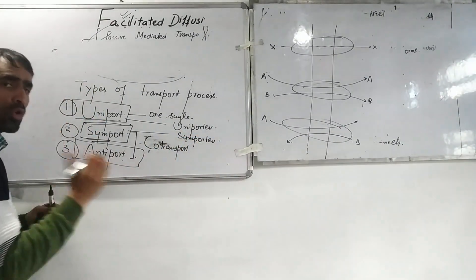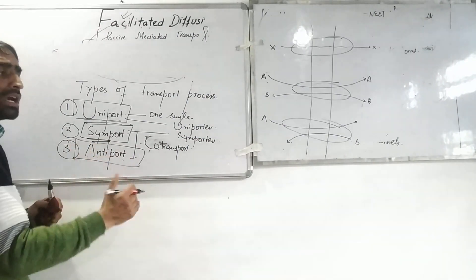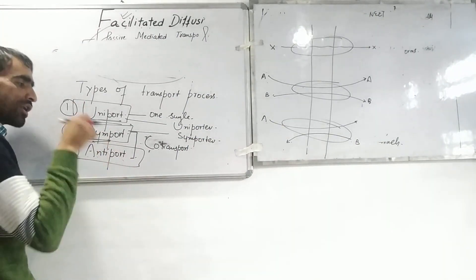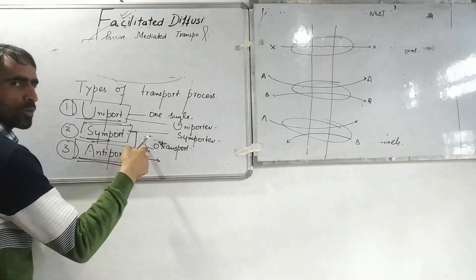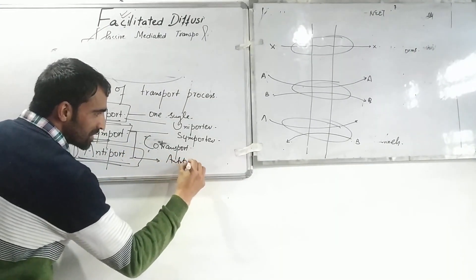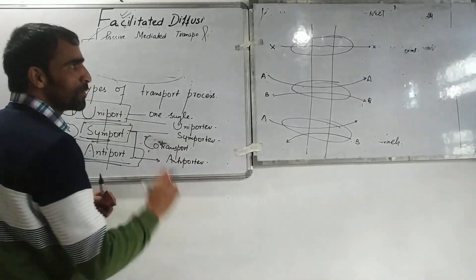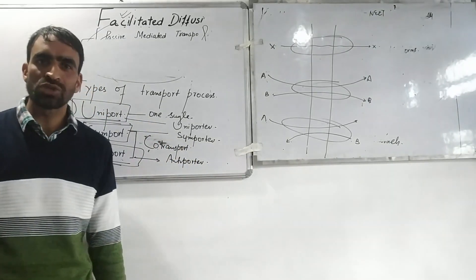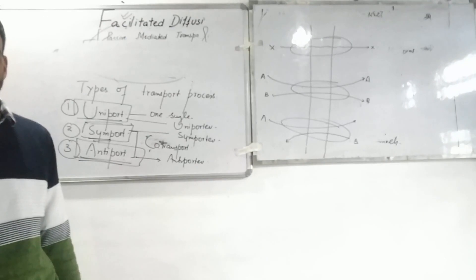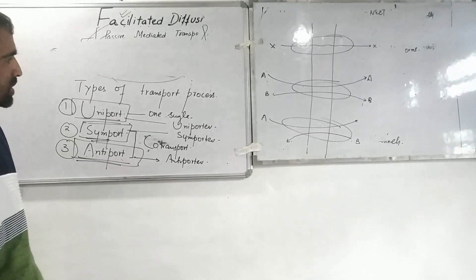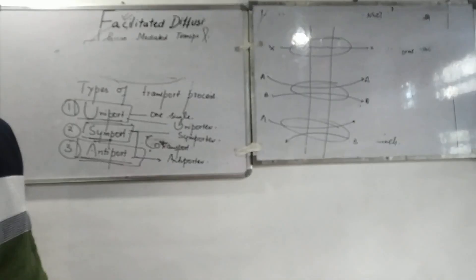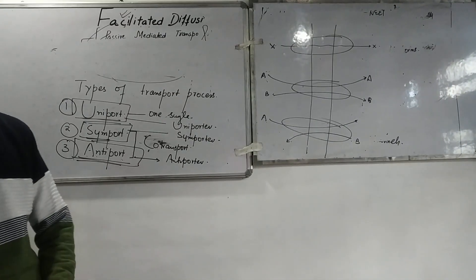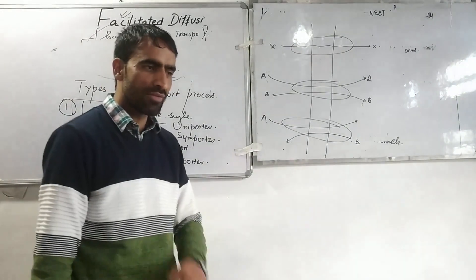If two molecules pass in opposite directions, this will be called as antiport, an example of co-transport. So this was facilitated diffusion and the types of transport process involving three processes. I hope you have understood this. Thank you very much, best of luck.